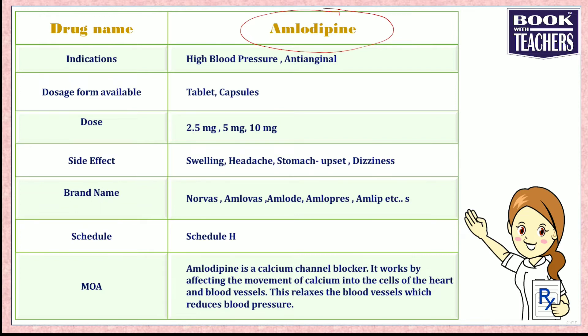The side effects associated with amlodipine are swelling, headache, stomach upset, or dizziness — any one or two of these can be the side effects. The famous brand names of amlodipine are Norvas, Amlovas, Amlod, Amlopress, Amlip, etc.